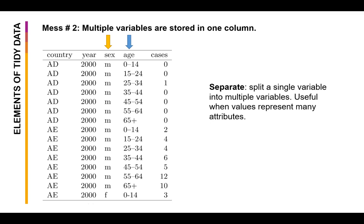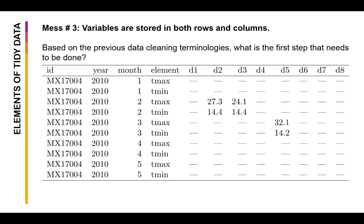Now let's take a look at the third type of mess. Mess number three is variables are stored in both rows and columns. According to Wickham, this is the most complicated form of mess since variables are located on both axes. So this dataset tells us the temperature data, both minimum and maximum, per weather station which is defined by the ID on a specific year month, and it is spread out onto different columns represented by days. Now based on the previous data cleaning terminologies, what could be the first step that needs to be done?